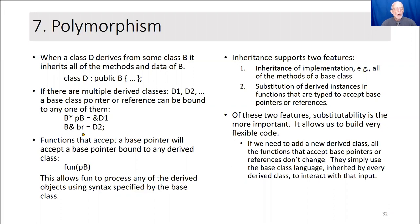I could also assign a base reference BR to the class D2. Understand that an ampersand on the right-hand side of an equal sign is an address. The ampersand on the left-hand side, adjacent to a type, is a reference. So I can define the language that will allow me to bind these derived objects to pointers or references typed as pointers or references to the base.